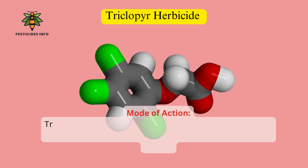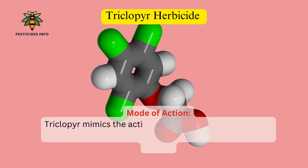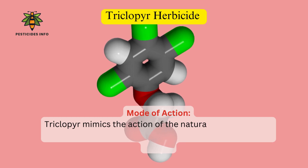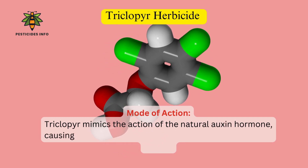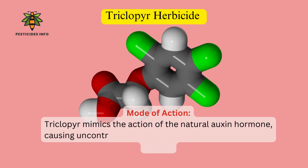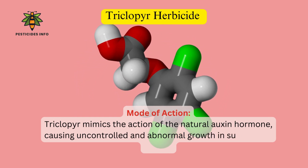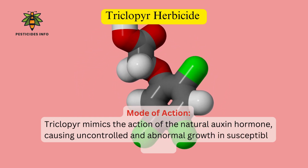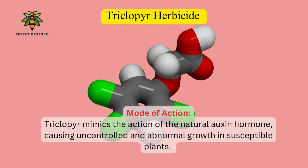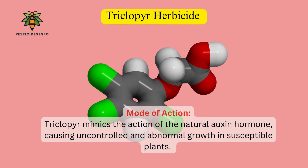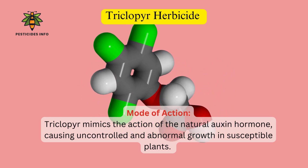Mode of action. The mode of action of Triclopyr involves disrupting plant growth processes, particularly the auxin plant hormone signaling pathway. Triclopyr mimics the action of the natural auxin hormone, causing uncontrolled and abnormal growth in susceptible plants. This leads to symptoms such as downward bending of leaves, stem twisting, and eventual plant death.